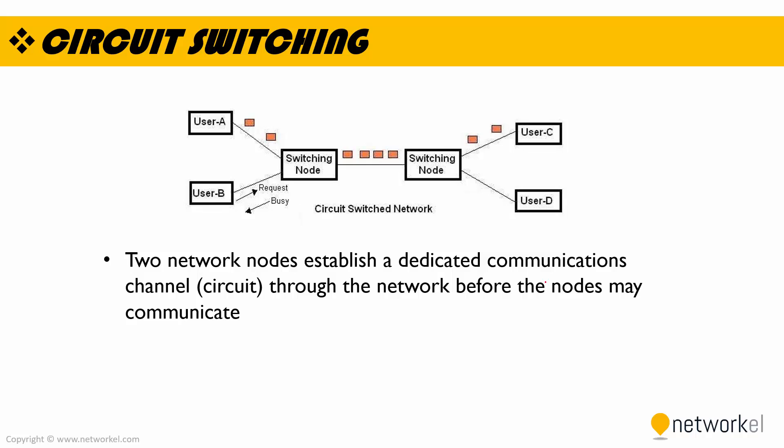Let's take a look at the circuit switching method. In circuit switching, two network nodes establish a dedicated communication channel through the network before the nodes may communicate. We have two nodes and a dedicated circuit here. In circuit switching, the circuit guarantees the full bandwidth of the channel and remains connected for the duration of the communication session.